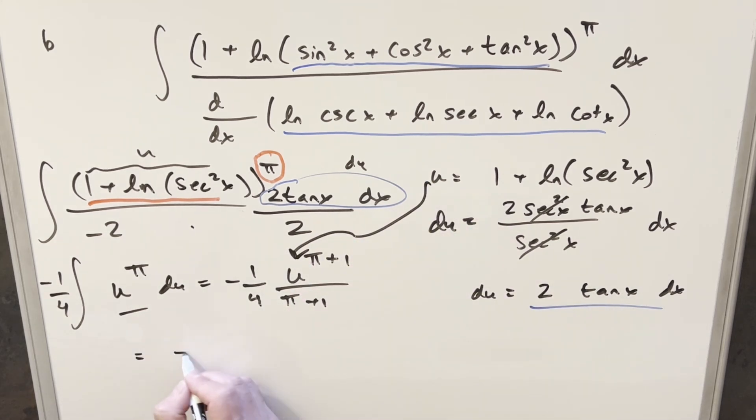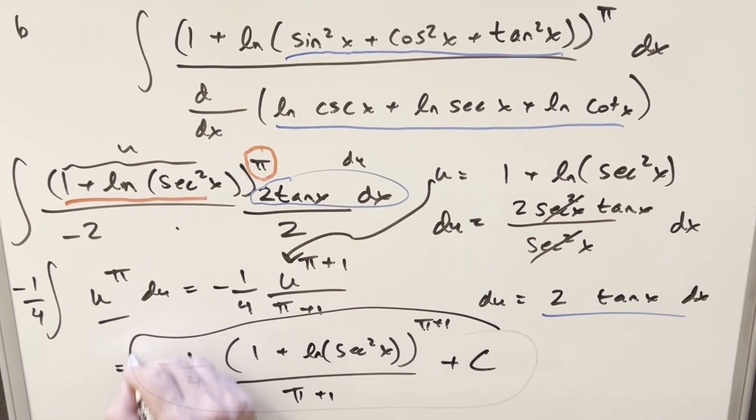So for my final solution, we have minus 1 over 4, 1 plus natural log secant squared x, all to the pi plus 1 over pi plus one, add a plus C, and that's it.